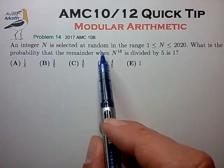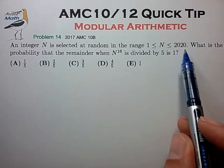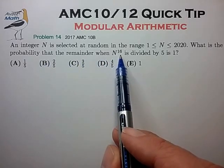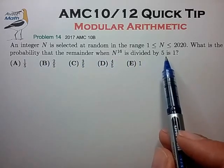An integer n is selected at random in the range of 1 to 2020. What is the probability that the remainder when n to the 16th power is divided by 5 is 1?